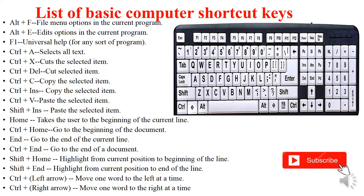Then F1 — simply press F1 in the keyboard — means universal help for any sort of program. Then Ctrl+A means select all the text, and Ctrl+X means cut the selected items.